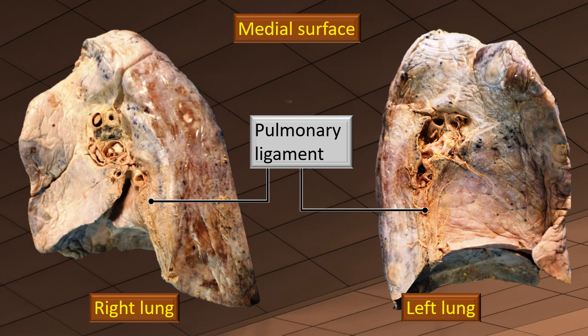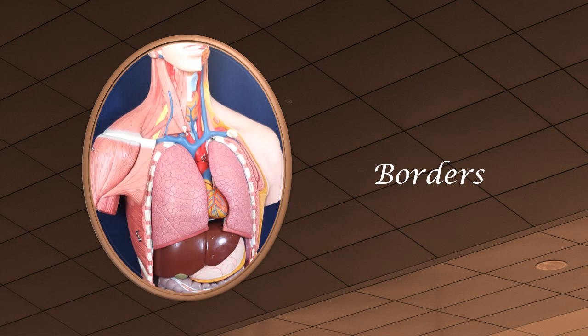Stretching below the hilum — or pulling it down — is a fold of membrane, which is the pleura. We call it the pulmonary ligament. It is nothing but a flap of pleura.